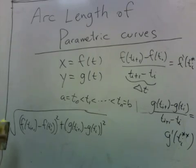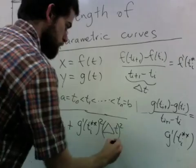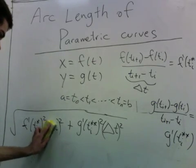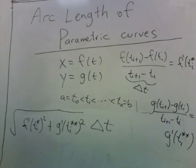But in any case, we can turn the distance between the two points into this, and we can even factor out a delta t, and this looks sort of like a piece of a Riemann sum.